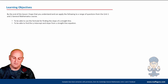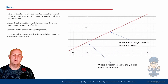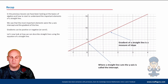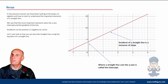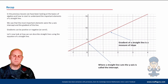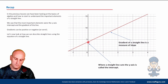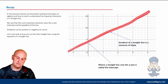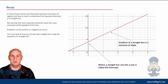So learning objectives are there behind me — you can pause the video to have a look. In a previous video we looked at the basics of a straight line graph and showed how to bring them up on your CAS calculator to get tables of values. What we found was that the two most important features were the y-axis intercept and the gradient.